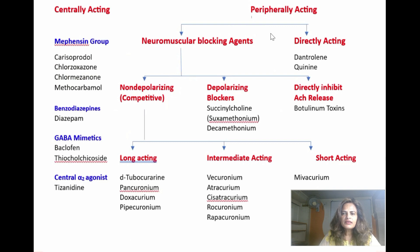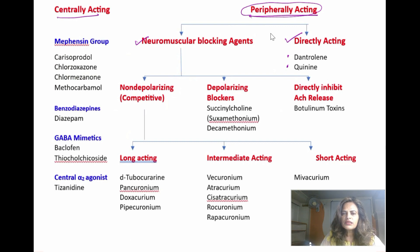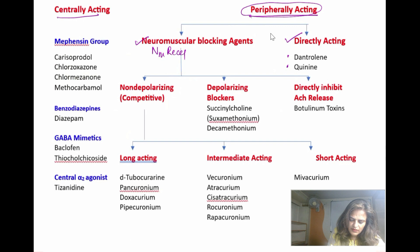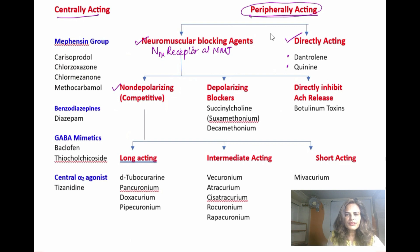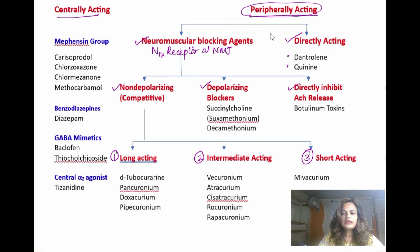Skeletal muscle relaxants are classified as centrally acting and peripherally acting. This video focuses on peripherally acting SMRs, which are broadly divided into neuromuscular blocking agents and directly acting agents. Directly acting agents include dantrolene and quinine. Neuromuscular blocking agents act by blocking the NM receptor at the neuromuscular junction. They are categorized into non-depolarizing (also called competitive), depolarizing, and agents that directly inhibit acetylcholine release. Non-depolarizing agents are further divided by duration: long, intermediate, and short acting.